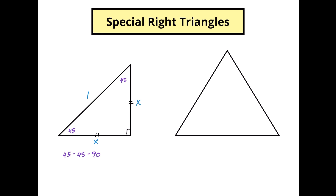Well, we can use our old friend the Pythagorean theorem. So we've got x² + x² = 1², which means we've got 2x² = 1. x² is going to equal 1/2 when I divide both sides by two, and then once I take the square root of both sides I'm going to have x equal to the positive or negative square root of 1/2.